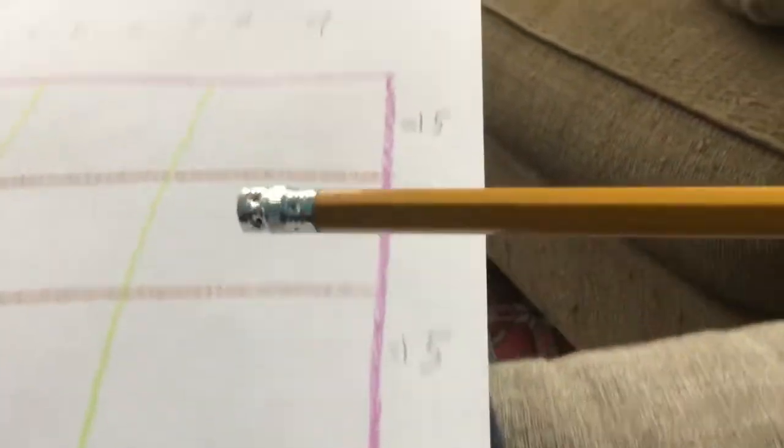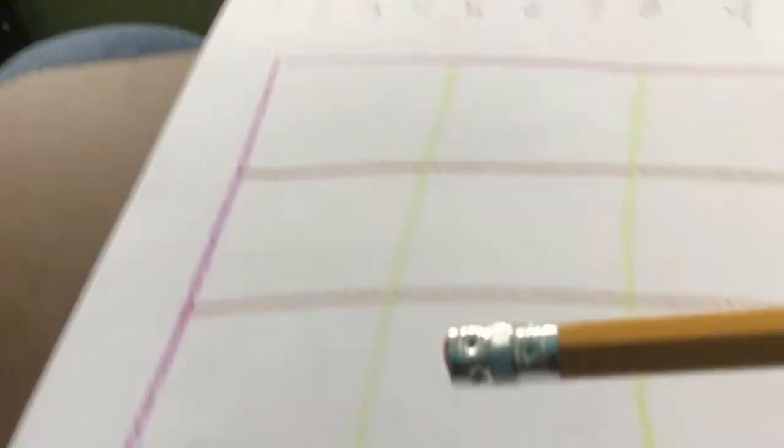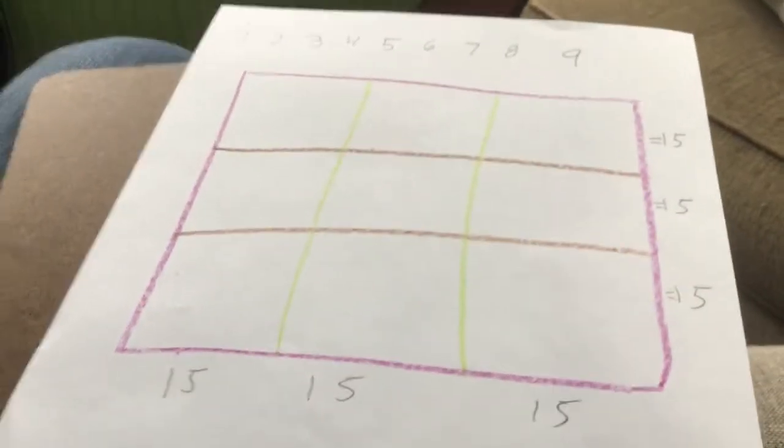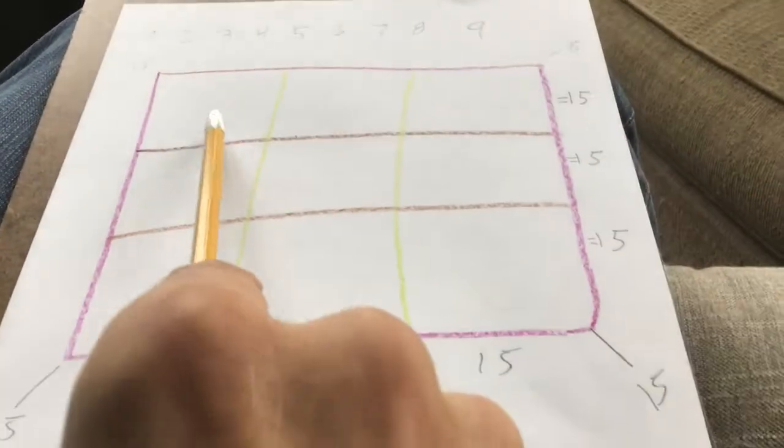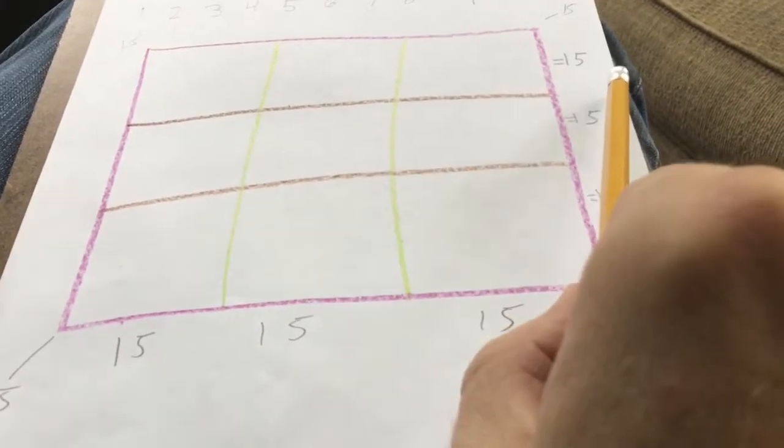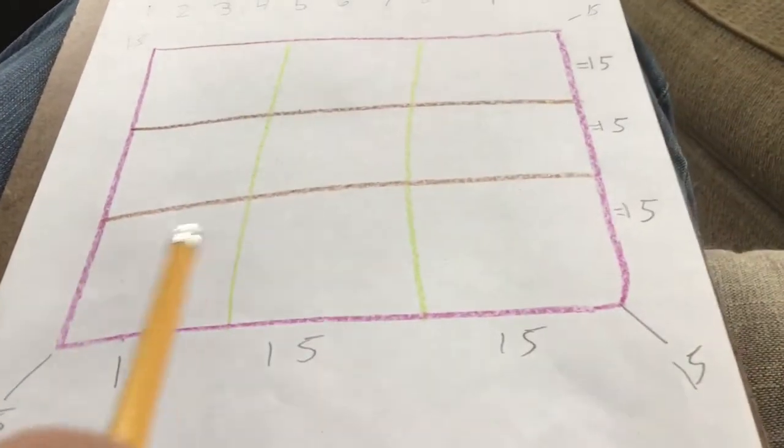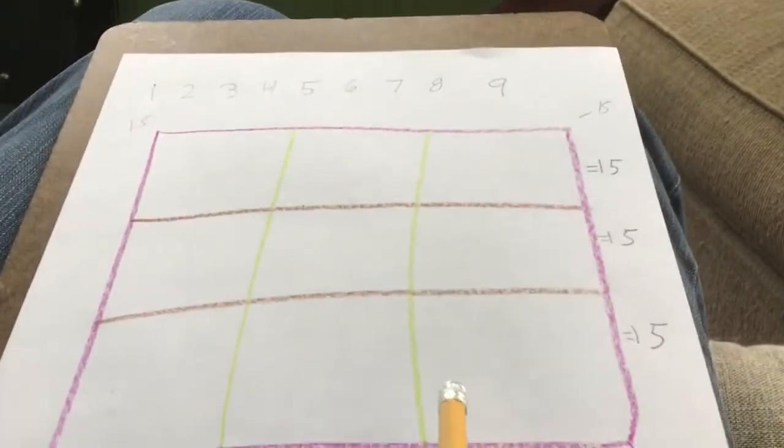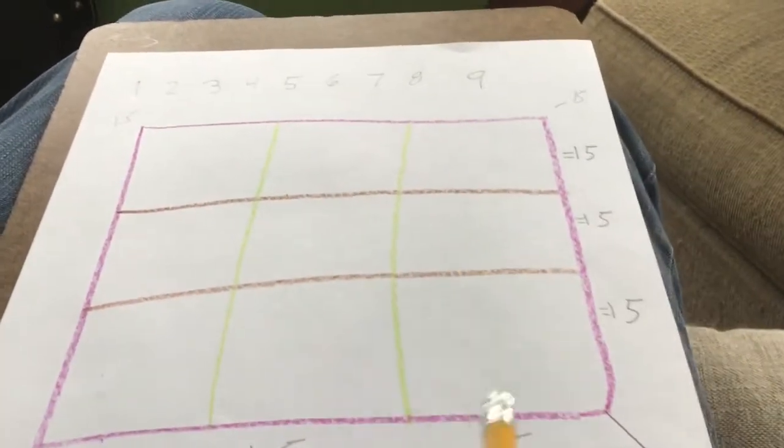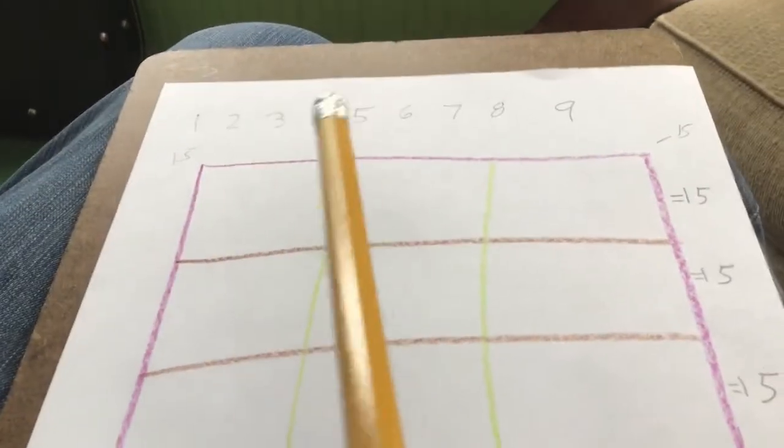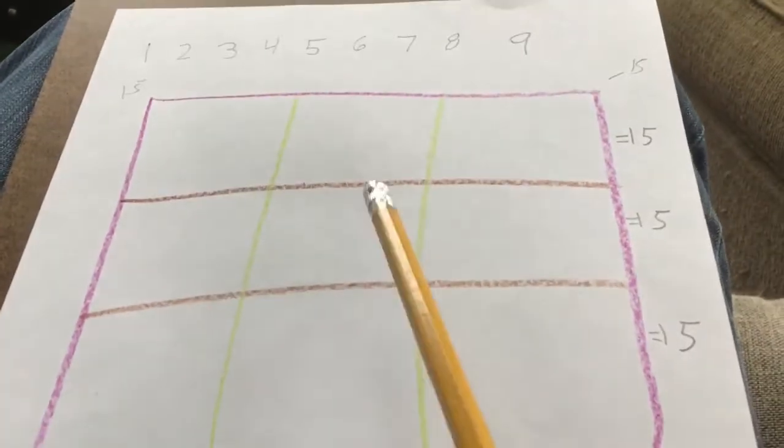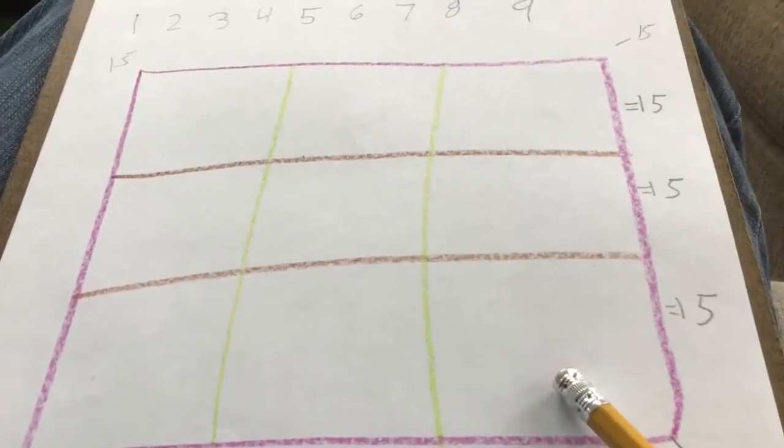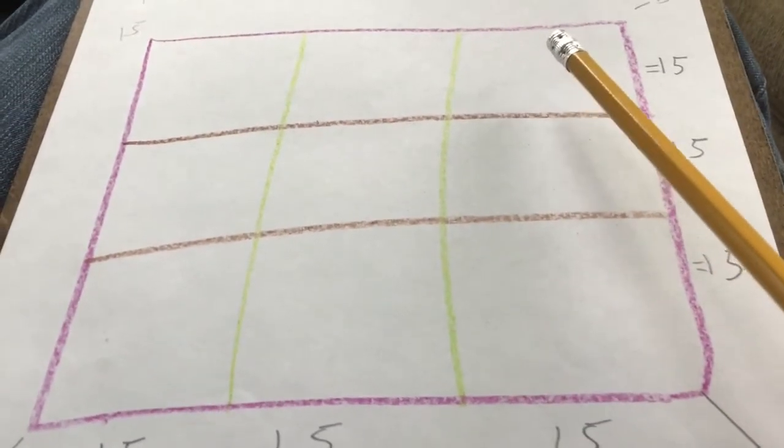Okay, maybe that doesn't sound too hard. Oh, hold it, I forgot one more thing. Not only will this plus this plus this equal 15, and this plus this plus this equal 15, and this plus this plus this, but going diagonally the other way is going to be 15. This plus this plus this is 15.